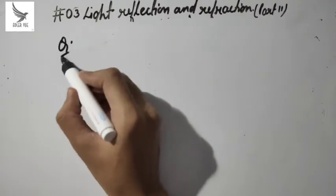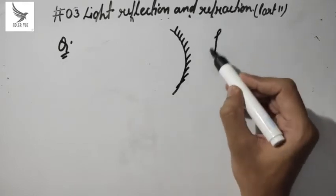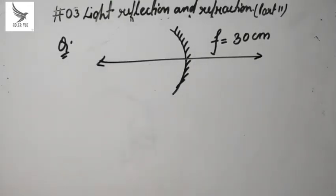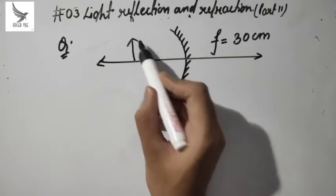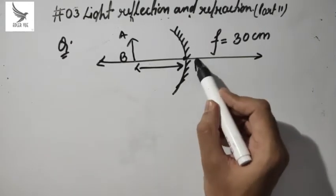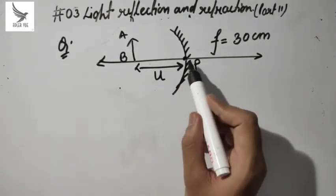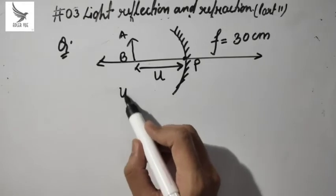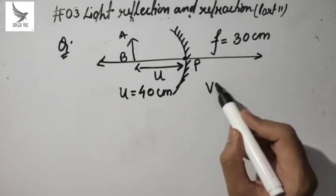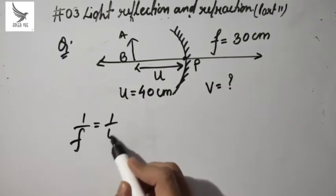The question is: a concave mirror has a focal length of 30 cm. An object AB is placed in front of this concave mirror. The distance from the pole to the object is U = 40 cm. We are asked to find V. But we cannot simply apply the formula 1/F = 1/U + 1/V without first knowing the sign convention.